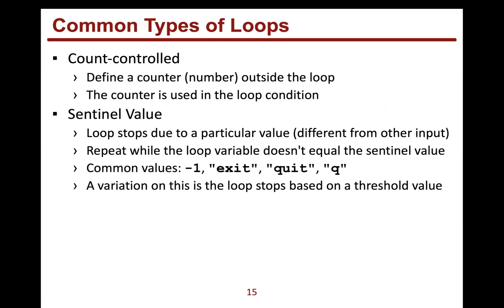The sentinel value is usually different from the other input. For example, if we're collecting integers, as soon as the user enters negative one we quit. We repeat while the loop variable doesn't equal that stop value. Common sentinel values include negative one, or strings like 'exit', 'quit', or 'Q' — so a user can quit by typing one of those values.